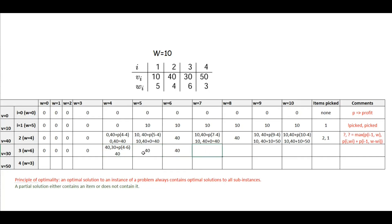For w equal to 7, applying the same principle: if we do not pick up this item, profit is 40. If we pick up this item, that is 30 plus profit from the remaining weight, which is 7 minus 6 equals 1. P1 is 0. So our solution is still 40. We get the same solution for w equal to 8, so we write 40 there.